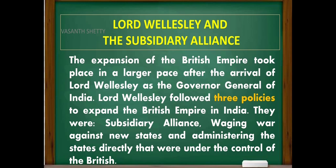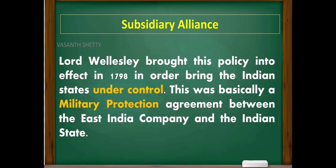Another important concept is Lord Wellesley and the Subsidiary Alliance. The expansion of the British Empire took place at a larger pace after the arrival of Lord Wellesley as the Governor General of India. Lord Wellesley followed three policies to expand the British Empire in India: subsidiary alliance, waging war against new states, and directly administering states under British control. Lord Wellesley brought this policy into effect in 1798 as a military protection agreement between the East India Company and the Indian states.